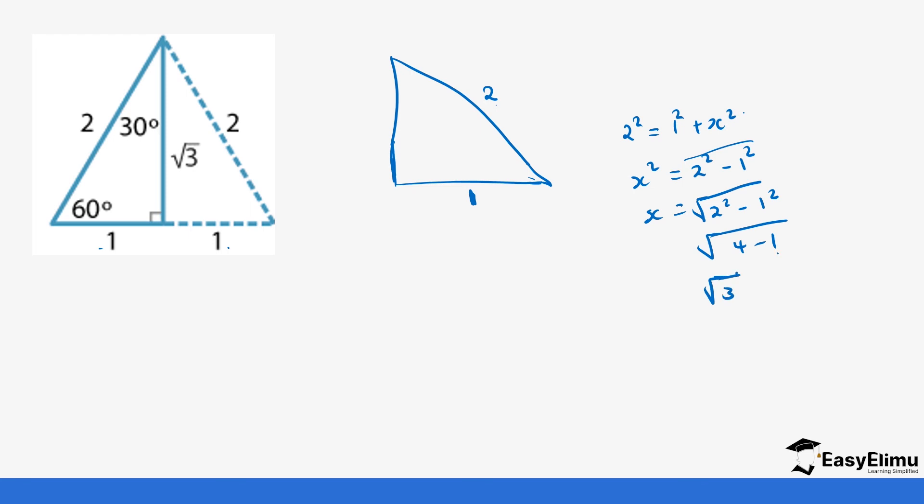If you go to the details now of the cos, we have tan 30, cos 30, sin 30, because we need these values. So when we use 30, this is 30, and this is root 3, and we have 60. So tan 30 is going to be opposite, which is 1 over adjacent, which is root 3. And cos 30 is going to be adjacent, which is root 3 over hypotenuse 2. And then sin 30 is going to be opposite over hypotenuse, which is 1 over 2.